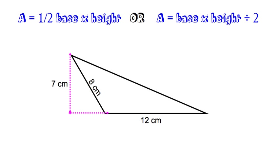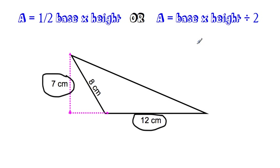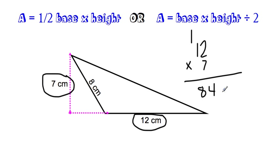Looking at the second example, notice they give us the height of the diagonal, but we cannot count that as the height — the height is actually how tall the triangle is from its tip vertex down to the base. So the vertical measurement is our height, and what the triangle sits on is the base. We do base times height: 12 times 7 equals 84. Then the second step, since it's a triangle, we cut it in half — 84 divided by 2 is 42 centimeters squared.